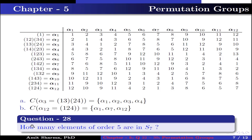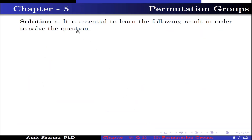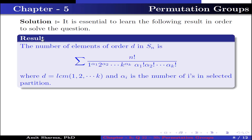Question number 28. How many elements of order 5 are in S7? To solve this, we use the result: the number of elements of order D in Sn is n! divided by (1^α₁ · 2^α₂ · … · k^αk · α₁! · α₂! · … · αk!), where D = LCM(1, 2, …, k) and αᵢ is the number of i-cycles in the selected partition.